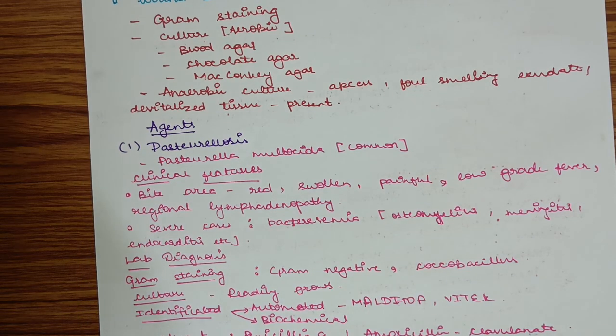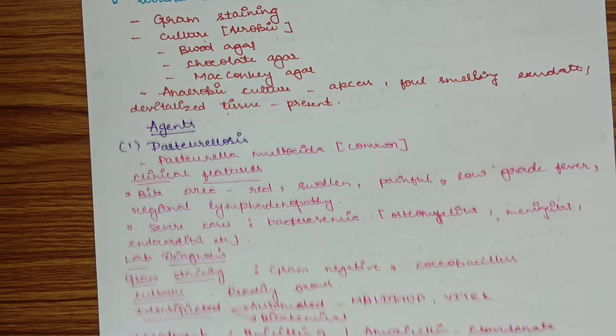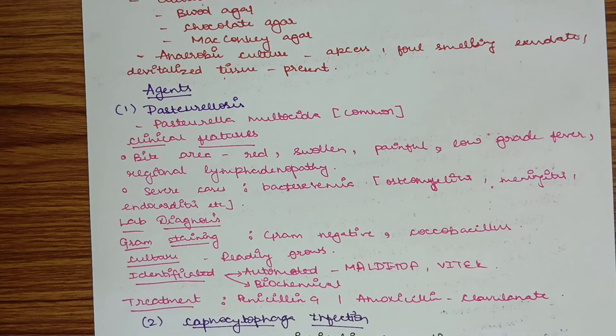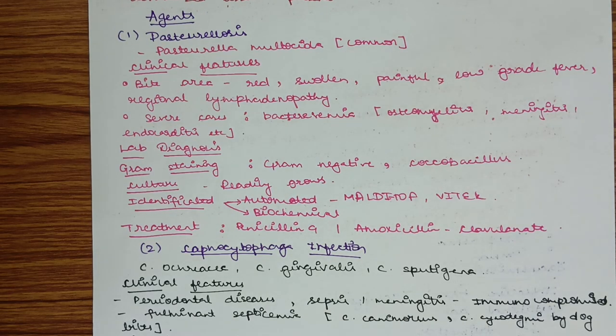Agents include Pasteurella and Capnocytophaga. Pasteurella, generally Pasteurella multocida, causes pasteurellosis. Clinical manifestations: in bite area there is redness, swelling, pain, low grade fever, and regional lymphadenopathy. In severe cases, bacteremia. Lab diagnosis by gram staining shows gram negative coccobacillus. Culture: it readily grows in culture media. Identification by automated methods like Malditof and Vitex or biochemical methods. Treatment is by Penicillin G and Amoxiclav.